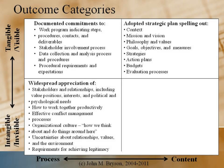But there are also some intangible and slightly invisible things that happen in the process of strategic planning. Stakeholders and relationships — including value positions, interests, and political and psychological needs — get met. We learn how to work together productively. We hopefully learn effective conflict management processes. The organizational culture, how we think about and do things around here, becomes clearer. Uncertainties about relationships, values, and the environment go away, and the requirements for achieving legitimacy and value creation get clarified.